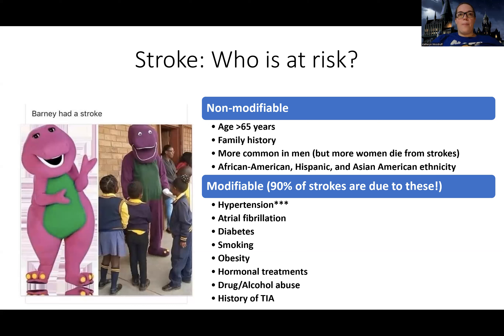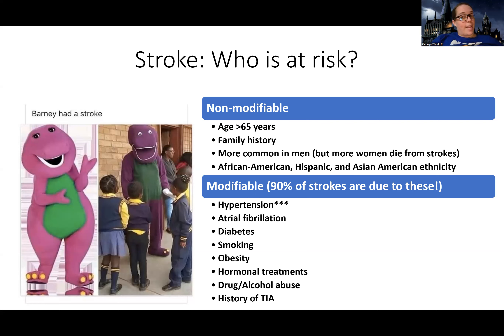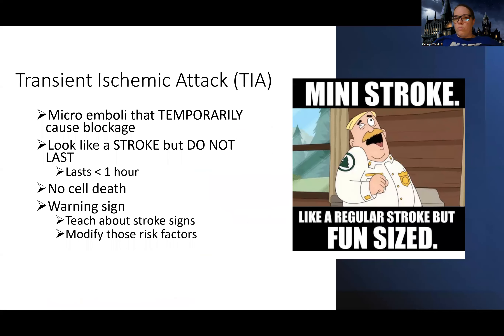Hormonal treatments can increase risk for blood clots — women on birth control may be at increased risk. Drug or alcohol abuse increases risk, especially cocaine, which is strongly associated with hemorrhagic strokes. If we have a young person come in with a brain bleed, many times it's because of cocaine use. Also, having a history of a TIA is a modifiable risk factor.